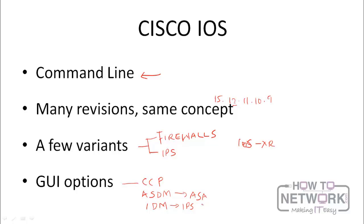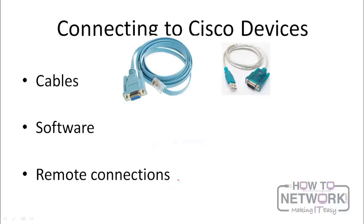If you are going to configure an IPS, you can go with the GUI. If you're going to configure an ASA, I would say no — use the CLI. And if you're going to configure a router or a switch, definitely use the CLI.